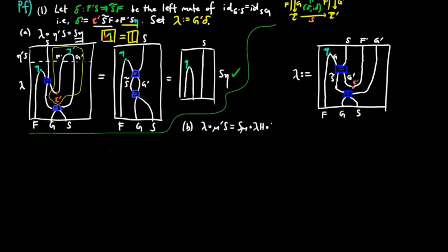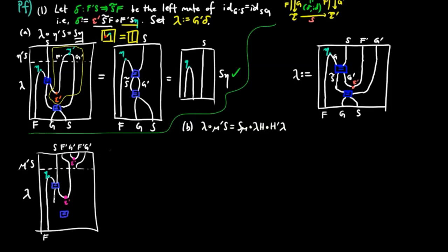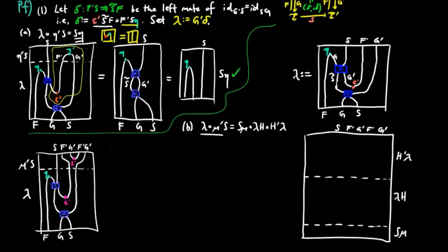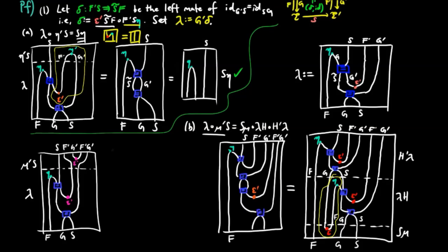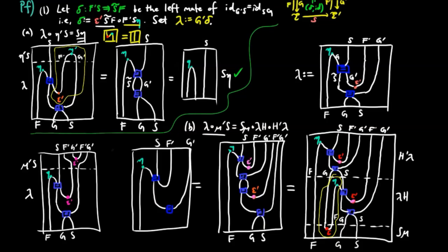For 1B, we give the string diagram for lambda mu prime S on the left, and S mu lambda H H prime lambda on the right. By the triangle identity for the adjoined situation FG, we can replace the following substring outlined in yellow by the string representing the functor G, and then remove the compositions of equalities. But then it is easy to see that these two string diagrams are equal by naturality, which just means that we can raise the pink dot on the right. And that completes the proof of 1.